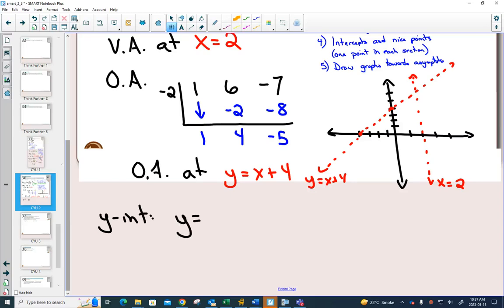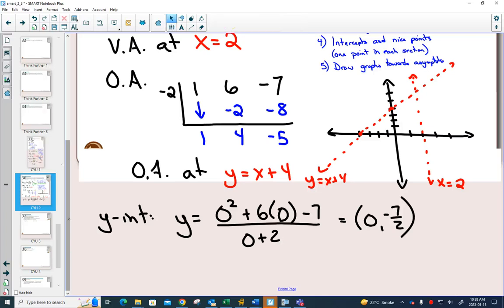That's plugging in 0 for x. And, I mean, I will write it out for now. But usually the y-intercept students will just be like, oh, I can just see that it is at negative 7 over 2. Really easy to do that mental math when x is 0.